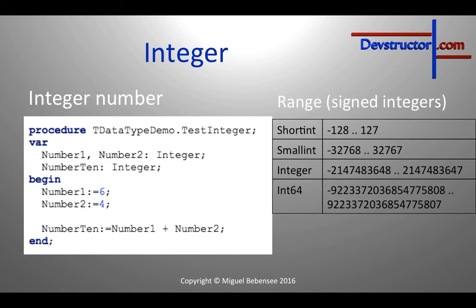There are differences between signed and unsigned integers. A signed integer can represent both negative and positive values, while an unsigned integer can only represent positive numbers. On the other hand, an unsigned integer can represent bigger values than a signed integer of the same bit size.